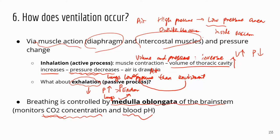When the carbon dioxide concentration is too high and blood pH is too low, that's going to trigger the medulla oblongata to make your body inhale to get oxygen in and carbon dioxide out.